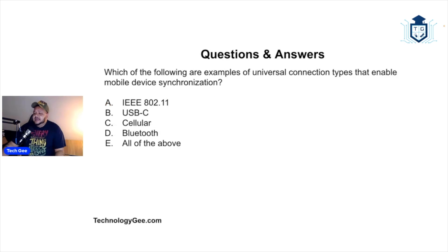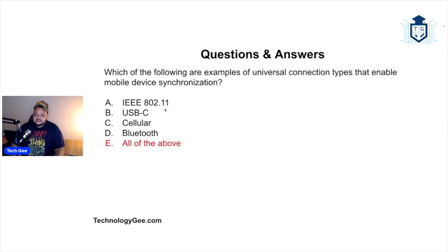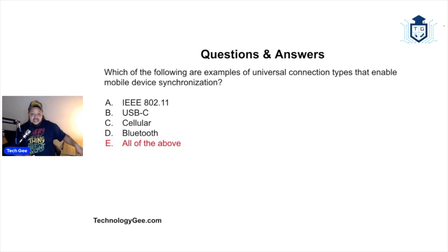Which of the following are examples of universal connection types that enable mobile device synchronization? IEEE 802.11, USB-C, cellular, Bluetooth, or all of the above? The correct answer is all of the above. 802.11 is just the fancy way of saying Wi-Fi. USB-C is a connector type. You can also synchronize via cellular and Bluetooth connections.